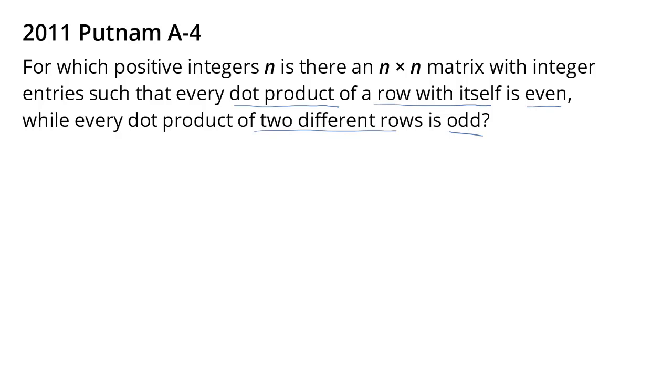And a natural follow-up question we had to this question is whether if the rows of a matrix has this property, then the columns do as well. So to rephrase the follow-up question, suppose we are given an n-by-n matrix with integer entries, can we then say the same thing about the columns?